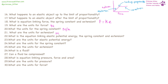What is the equation linking elastic potential energy, the spring constant, and extension? That is: elastic potential energy equals half the spring constant times extension squared. The units for elastic potential energy, the same as any type of energy, are joules. The units for spring constant are newtons per meter, and the units for extension are meters.